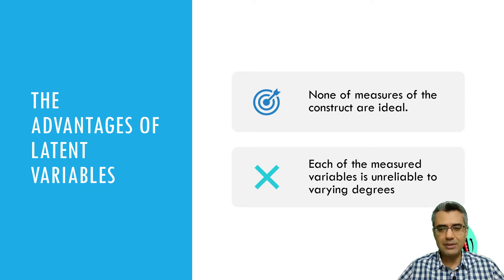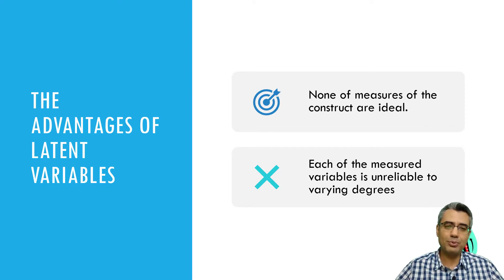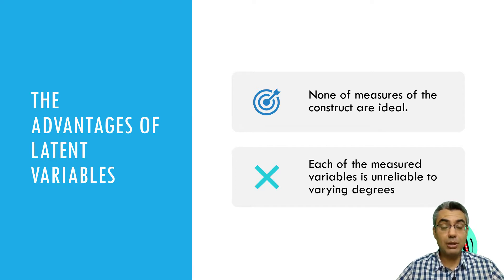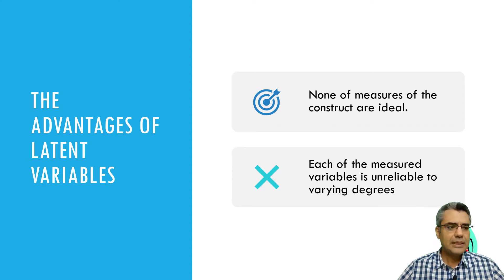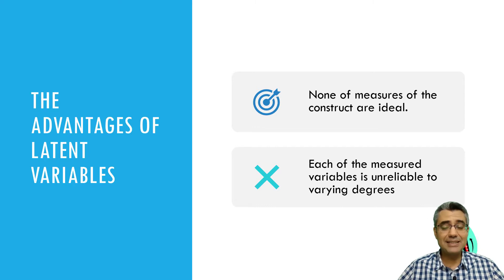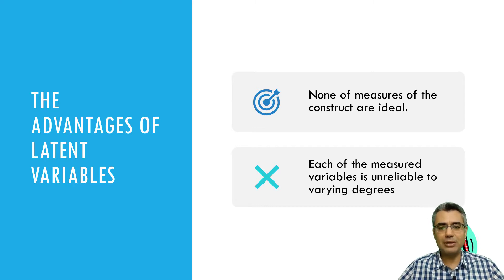In other words, we want to increase the reliability of the construct. Reliability and validity are the two important aspects of measurement. We need to assess the reliability and validity of our measures. Let me use the classic example to explain what we mean by reliability and validity.